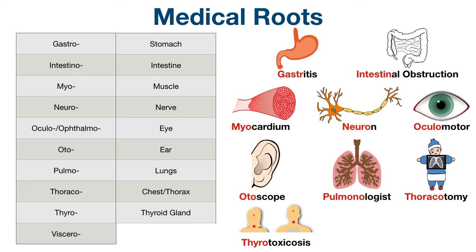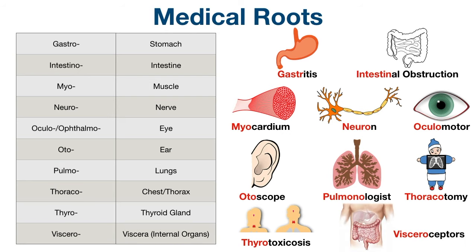Next, we have thyro, which pertains to the thyroid gland. For example, thyrotoxicosis is the condition in which there is too much thyroid hormone in the body. Finally, we have viscero, which refers to the viscera or internal organs, especially those in the abdominal cavity. An example medical term is visceroceptors, which are a group of receptors located in visceral organs.